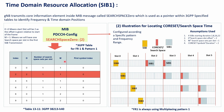The M parameter tells the UE that the first slot will contain one search space occasion. Each SSB is associated with a SIB1, so the UE can detect the SIB1 for each SSB. Once the UE reads the SIB1, it can further proceed to read other system information.